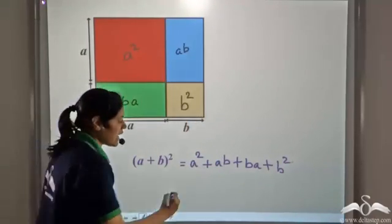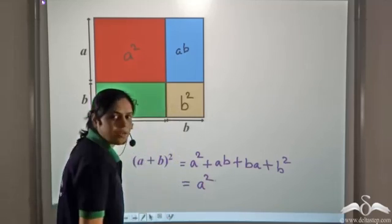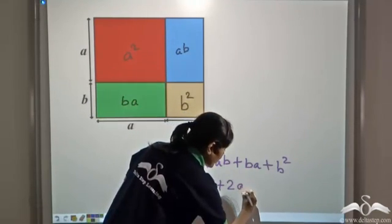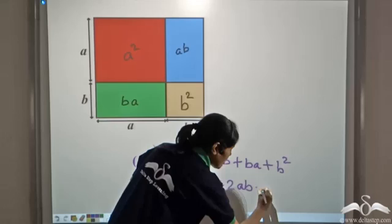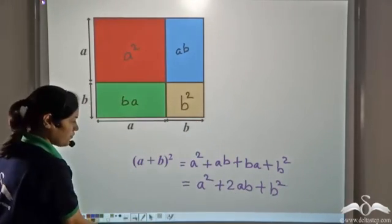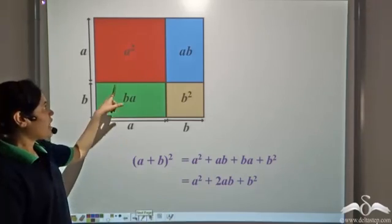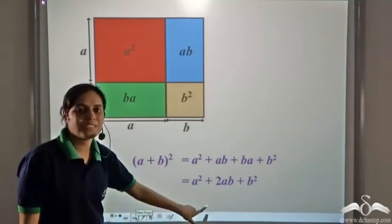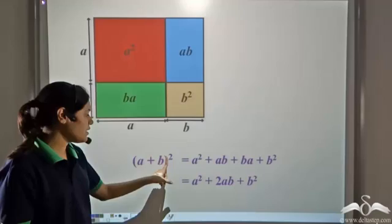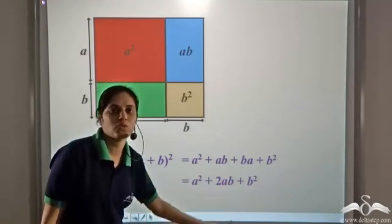Again, we can combine the like terms. And we get a square — ab and ba are like terms — so a square plus 2ab plus b square. So this is what we get, and hence we have proved this identity geometrically as well. So a plus b whole square is a square plus 2ab plus b square.